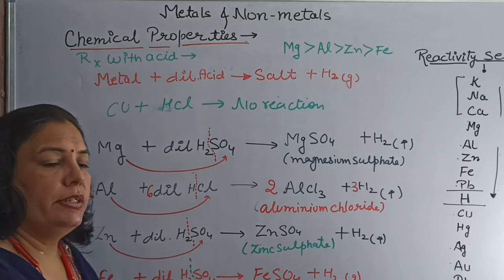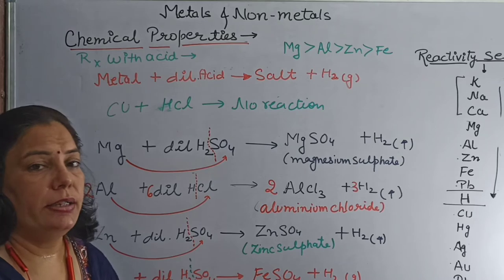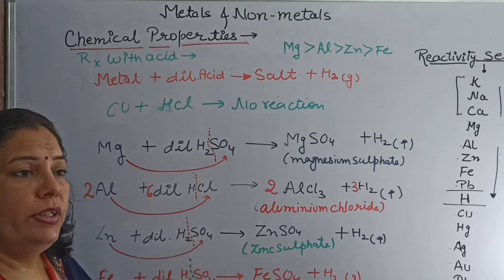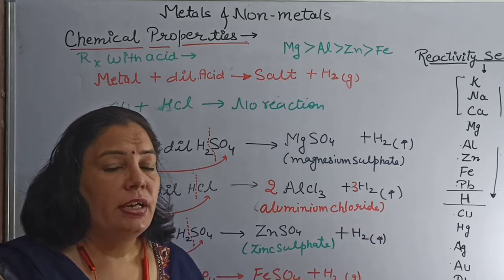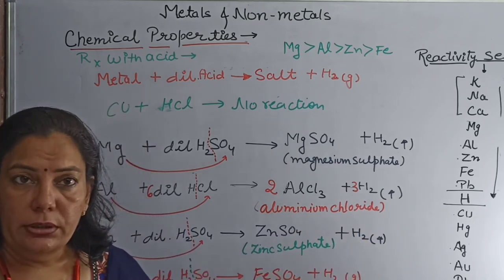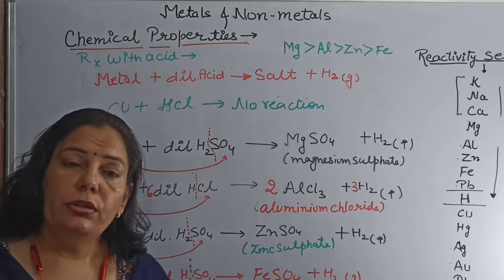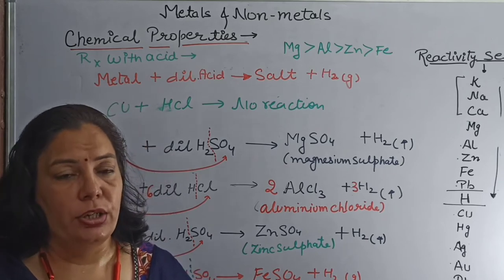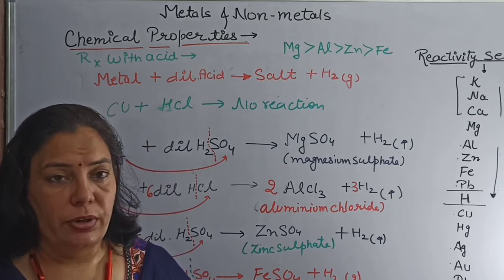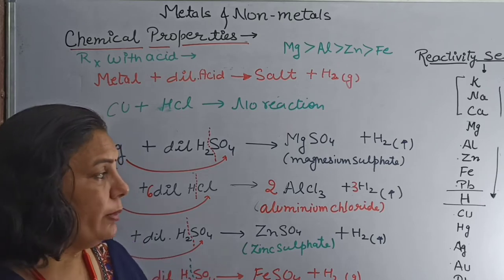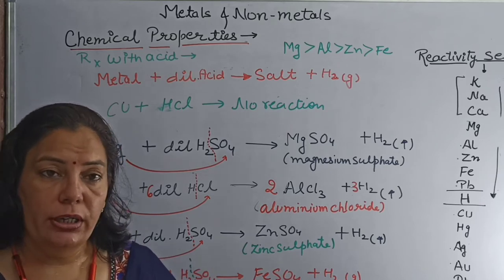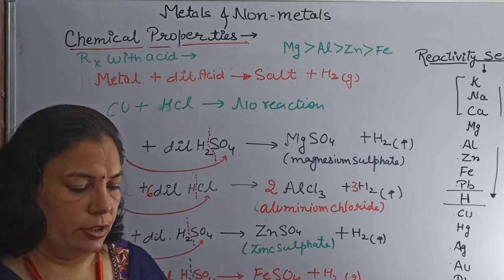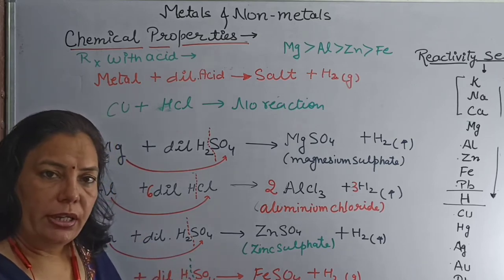On the basis of these reactions, we can arrange metals in a reactivity series. The basic criteria is: when metals react with oxygen, water, and acid, on the basis of these reactions we arrange metals in a particular order called the reactivity series.